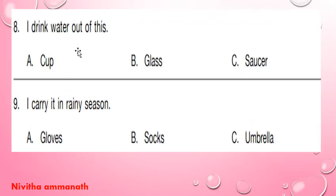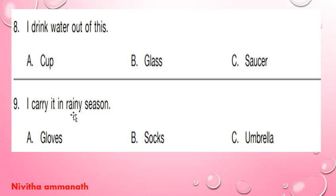I drink water out of this — we drink water from the glass, so B is the correct option. Next question: I carry it in rainy season — gloves, socks, umbrella. We carry an umbrella in the rainy season, so 9C is the correct option.